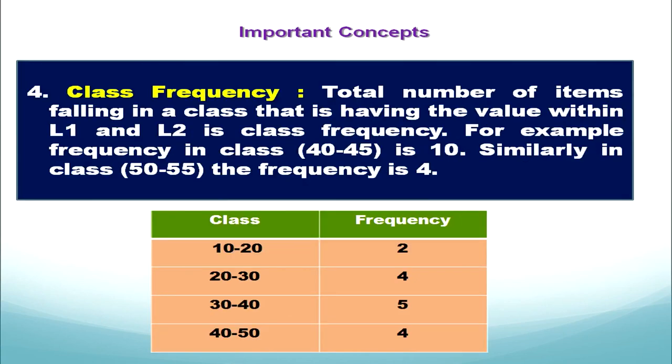The next concept is class frequency. Every class has a frequency, which shows the total number of items falling in that class — that is, items having values within the lower limit and upper limit. For example, for the class 10 to 20 the frequency is 2, and for 20 to 30 the frequency is 4.